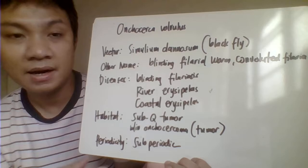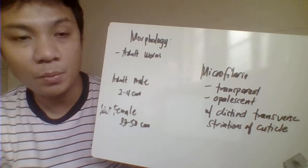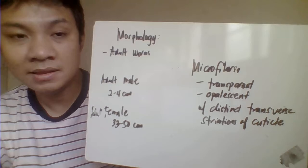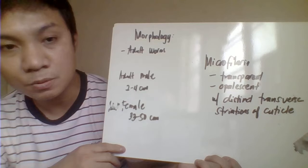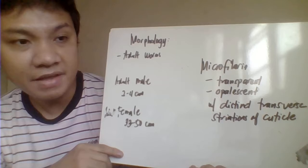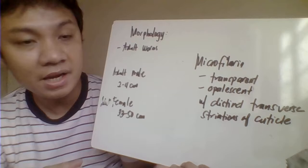Those nodules are called onchocercoma. The adult worm is found inside these nodules. For periodicity, this is subperiodic. The adult worm follows the usual characteristics of filarial worms — they are thread-like and creamy white. The lifespan can go as long as 20 years. Adult male is 2 to 4 cm with a curved tail end. Adult female measures 33 to 50 cm with a rounded end.